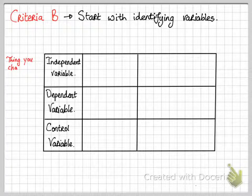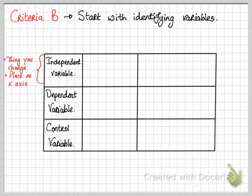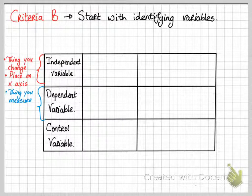Independent variable is the thing you change. And this goes on the x-axis. Dependent variable is the thing you measure. And this goes on the y-axis.